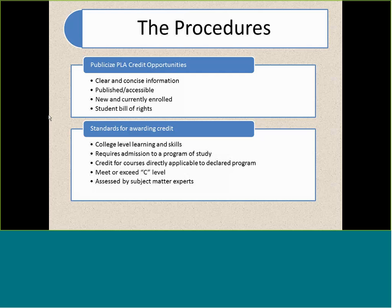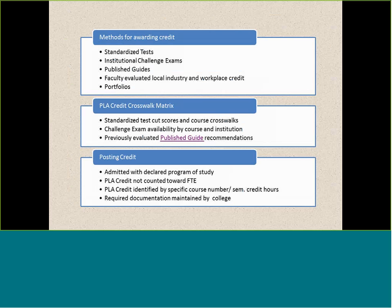We're doing all of this to keep ourselves in line with the Student Bill of Rights, which essentially says students have the right to challenge a course if they feel they have the requisite learning. The standards for awarding credit require that it be college level learning and skills — important when thinking about adult ed students. Students have to be admitted to the institution, choose a program of study, and the credit has to be applicable to that program. It has to be appropriate — you can't claim auto mechanics credit on a business major program. They must meet or exceed a C level, and it's assessed by subject matter experts, meaning faculty make those decisions.